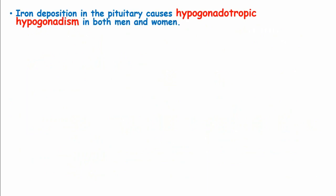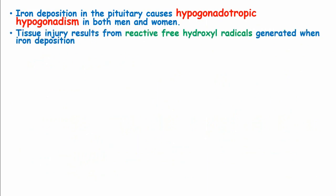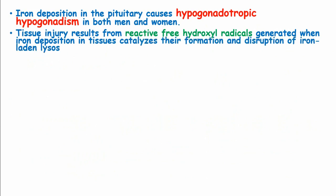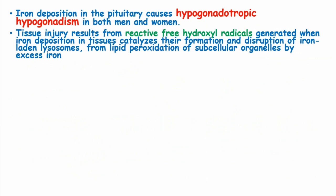Iron deposition in the pituitary causes hypogonadotrophic hypogonadism in both men and women, which refers to hypogonadism occurring because of reduced gonadotrophin hormone production. Tissue injury results from reactive free hydroxyl radicals, generated when iron deposition in the tissue acts as a catalyst causing their formation, and a disruption of iron-laden lysosomes from lipid peroxidation of subcellular organelles by excess iron.